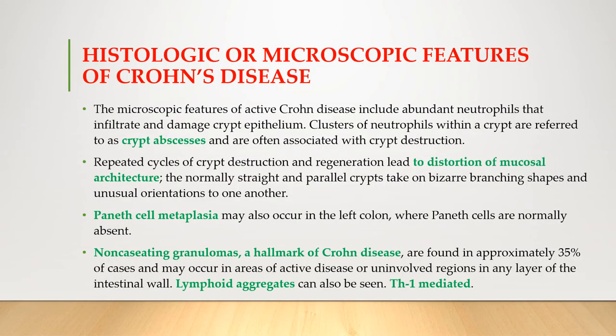Now let us study the histologic or microscopic features of Crohn's disease. Active Crohn's disease includes abundant neutrophils, which are the first cells to appear at sites of inflammation. The neutrophils damage the crypt epithelium — crypts being small tubular glands in both the small and large intestine. Clusters of neutrophils within a crypt are referred to as crypt abscesses and are often associated with crypt destruction.